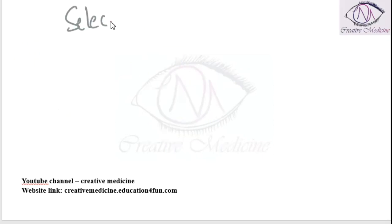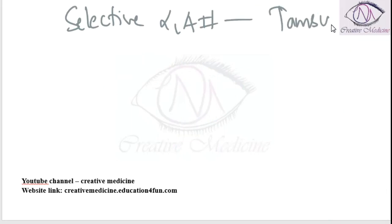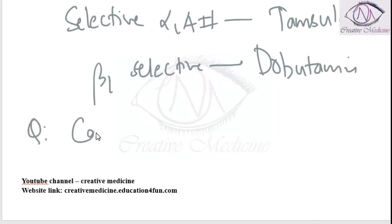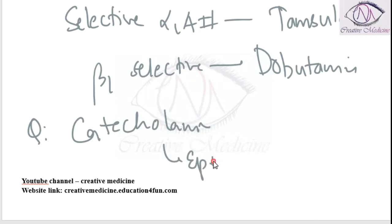The selective alpha-1a blocker is tamsulosin. The selective beta-1 agonist is dobutamine. Which of the following are catecholamines? Catecholamines include epinephrine, norepinephrine, and dopamine.